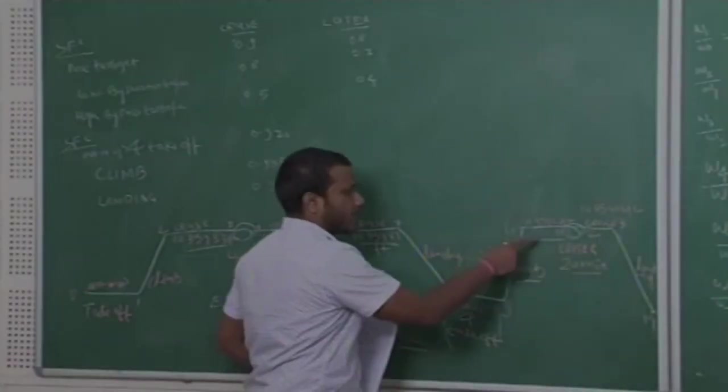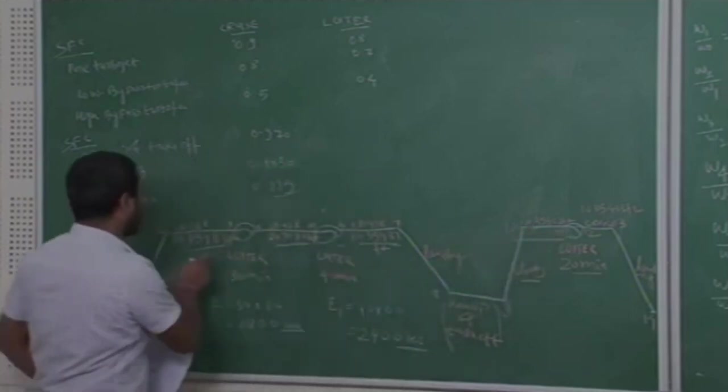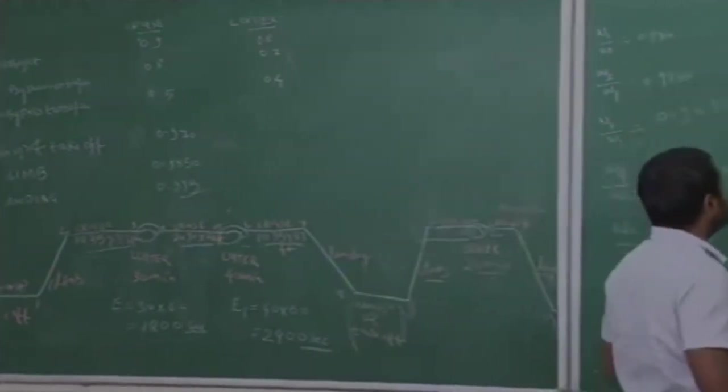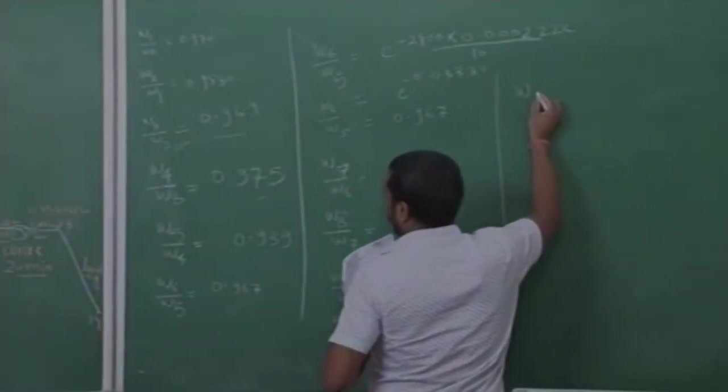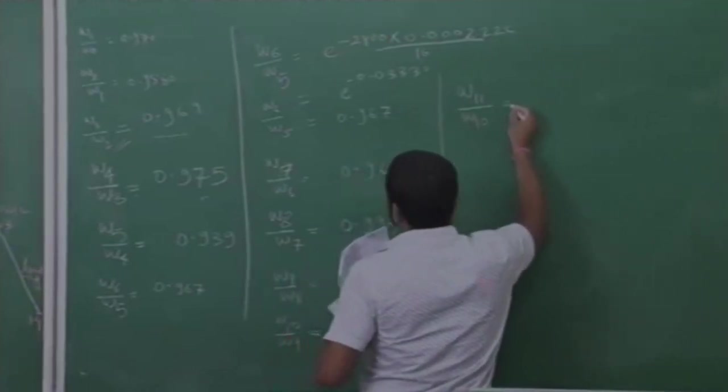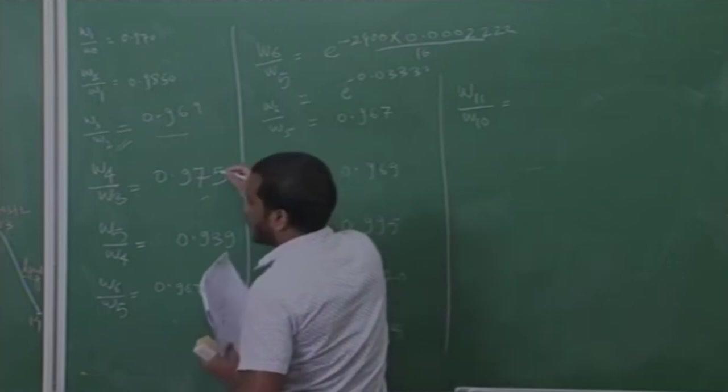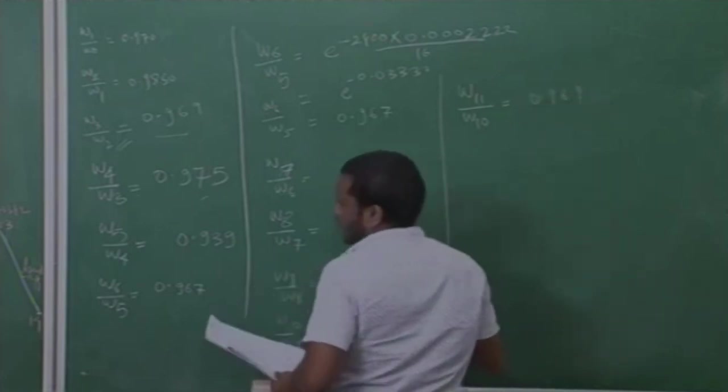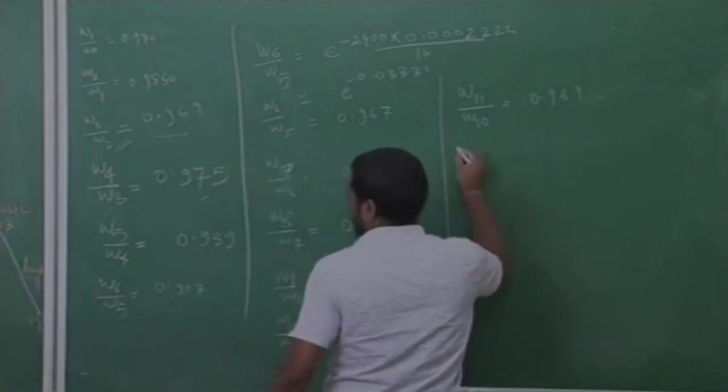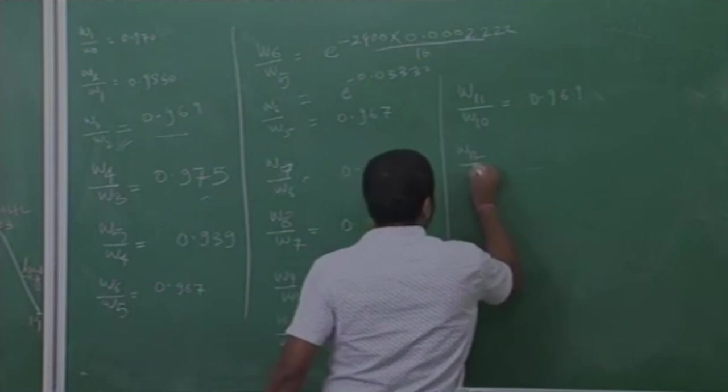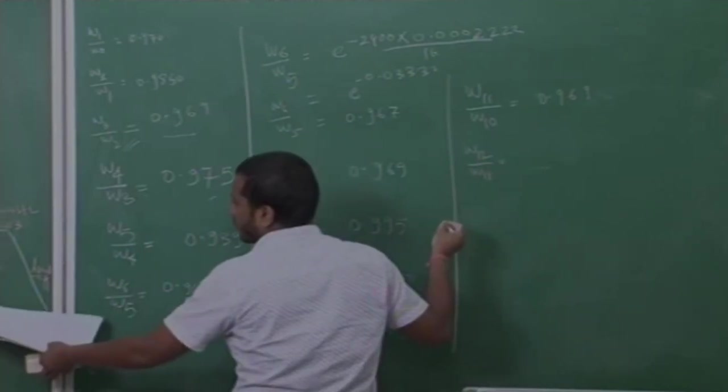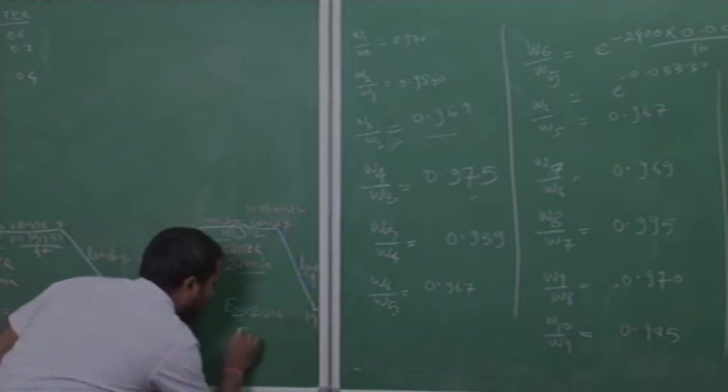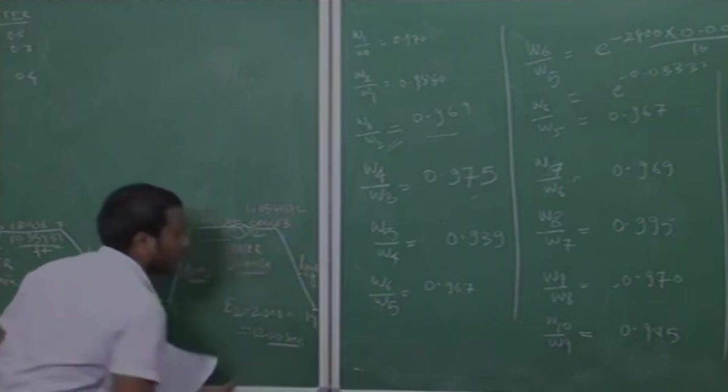Here for point 10 to 11, that range is same as point 2 to 3 and point 6 to 7. So weight ratio, weight fraction will be same. So here W11 by W10 same as W3 by W2 or W7 by W6. So W7 by W6 is 0.969. Again the loiter. W12 by W11 so loiter for 20 minutes, so again have to convert it e times 20 into 60, that is 1200 seconds.